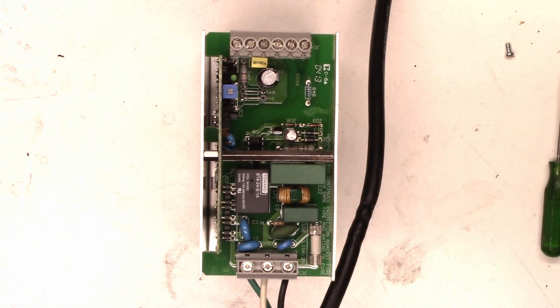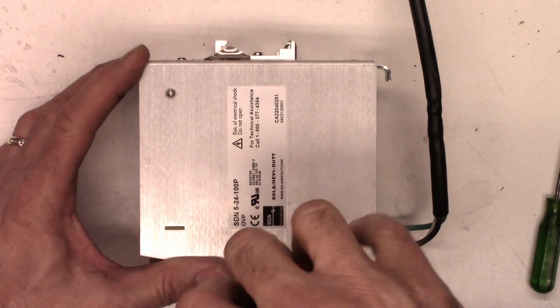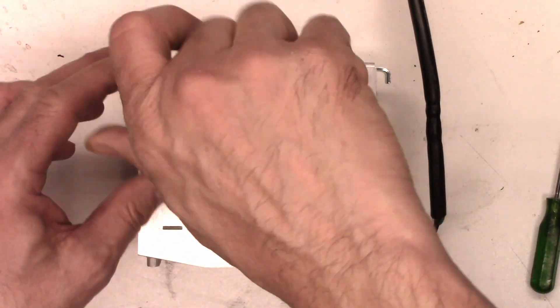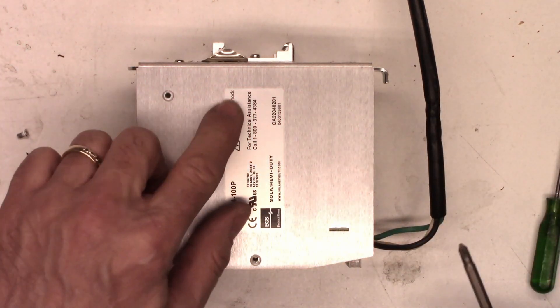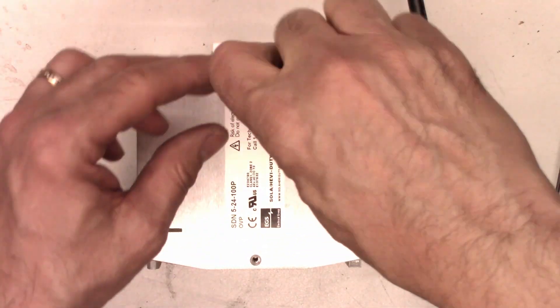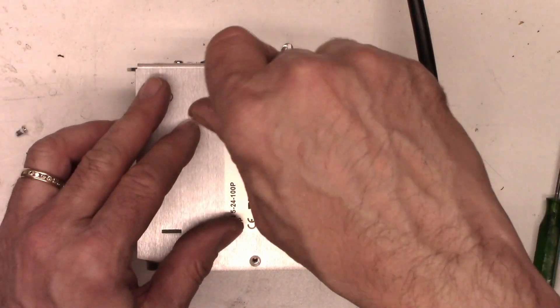So let's go ahead and get the board completely out of this. So now to remove the board, I'm going to have to take out these screws. Plus they've hidden two more screws underneath this label. That way they can tell if I've been into it.